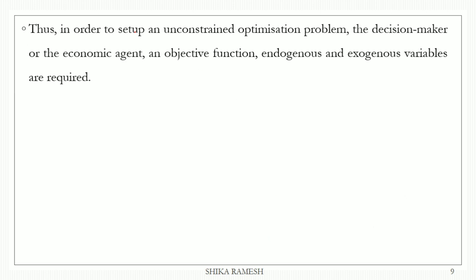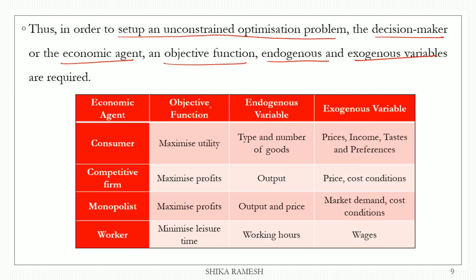There is an unconstrained optimization problem. If we have a decision maker — an economic agent — with an objective function, then we have endogenous and exogenous variables. The consumer is an economic agent whose objective function is utility maximization. The consumer's endogenous variables are the type and number of goods chosen. The exogenous variables are product prices, consumer income, and the consumer's taste and preferences.